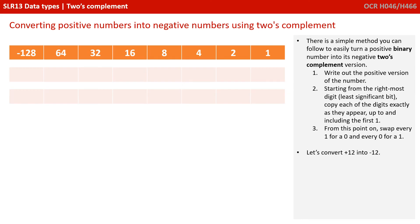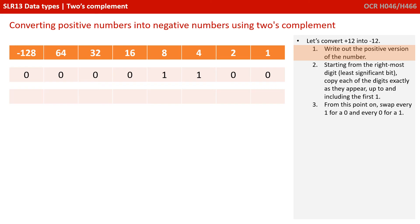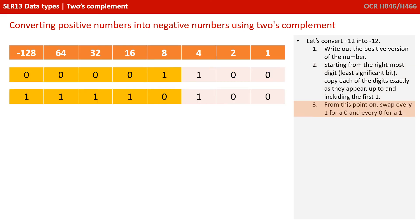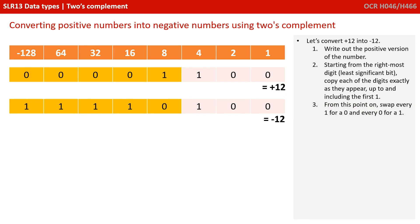Let's look at this in practice by converting positive 12 into negative 12. First we write out the positive version: 12 in binary has a 1 in the 8 column plus a 1 in the 4 column — 8 plus 4 is 12. Starting from the right-hand side, we copy every value working left up to and including the first 1: 0 becomes 0, 0 becomes 0, 1 becomes 1. After this point we switch — where we had a 1 we write a 0, and where we had a 0 we write a 1. What you've ended up with is the negative version of 12, and this works every time.